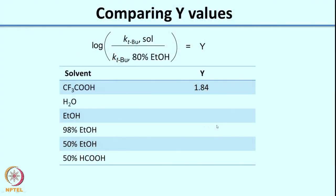Let us look at the first case: water. Comparing water with 80% ethanol — 80% ethanol means 80 parts ethanol and 20 parts water, so water here is 100% water versus 20% water. Water is more polar than ethanol, so in the numerator you have a more polar solvent, meaning the Y value will be positive. Comparing with trifluoroacetic acid versus 80% ethanol: you have a more polar environment, giving a Y value of 1.84. With water the value is much higher because it is a far more polar solvent.